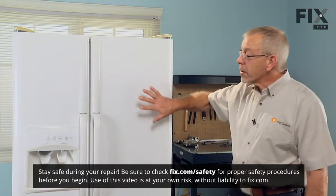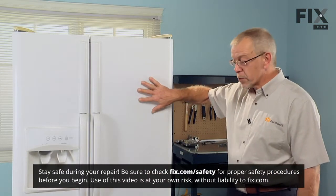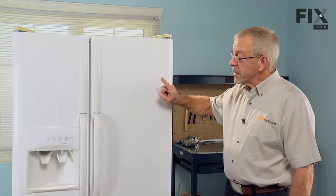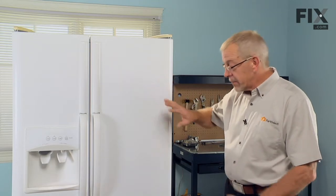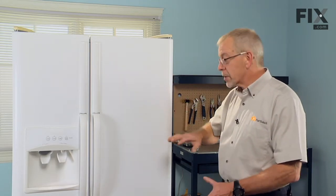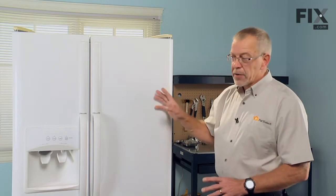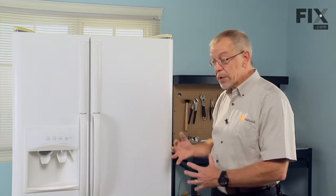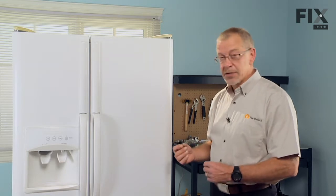To do this repair we are going to have to remove the fresh food door from the refrigerator. Now a couple things we'll have to do is remove all of the bins and any food items that are on the refrigerator door, take those out of there and then turn off both the freezer and the fresh food controls because the door will be removed for the length of time that it takes to do the repair.